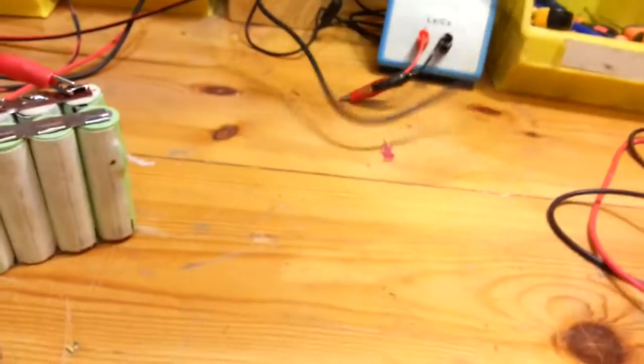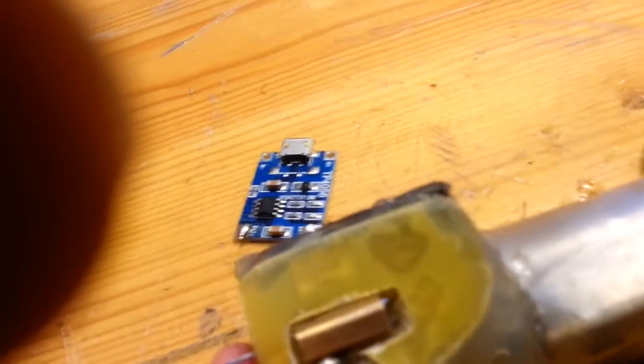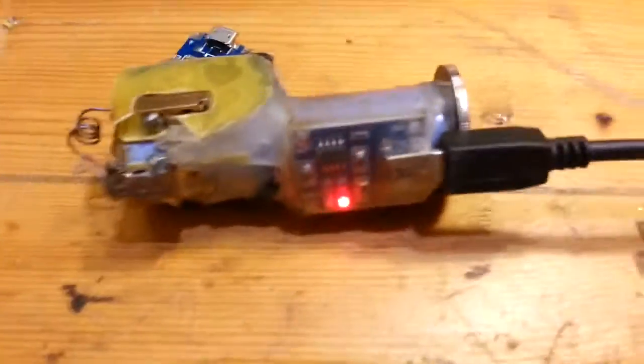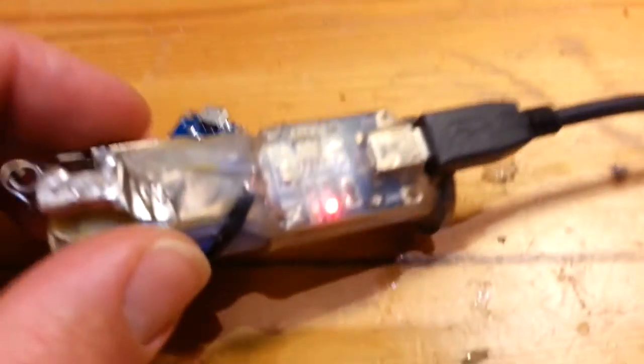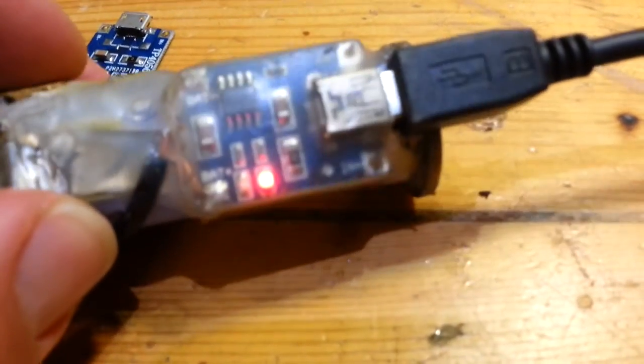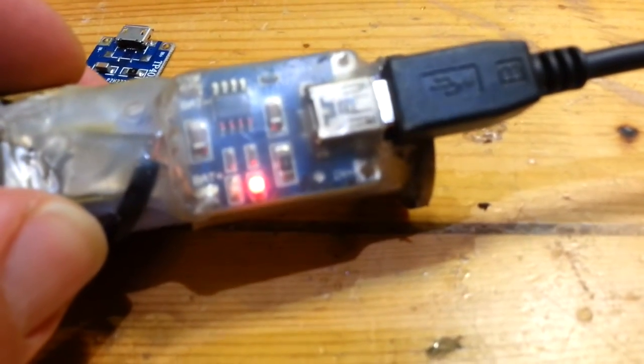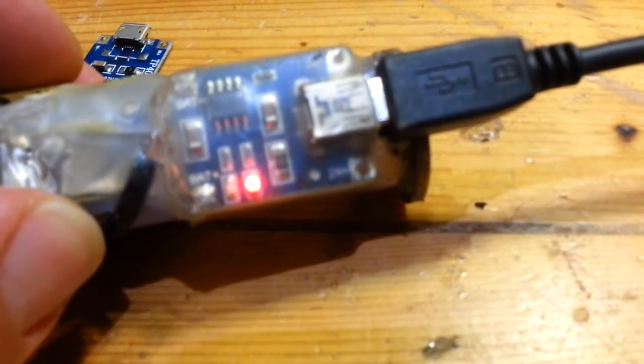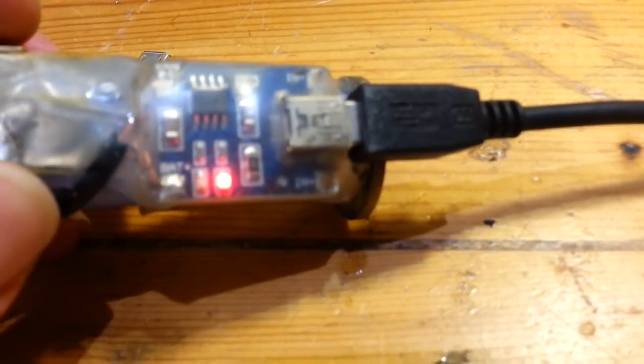When you take this 5 volt cable, let's connect it. When I connect it to the 5 volt, it's charging. And when it will be fully charged, the light will be green, so you know your lighter is fully charged.